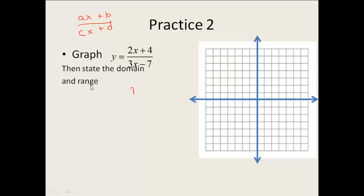It tells us that my vertical asymptote is where our denominator is equal to 0. So I need to take my CX plus D, my 3X minus 7. I need to set it equal to 0 and solve it. So add 7 to both sides, divide by 3, and I get a vertical asymptote at 7 thirds.